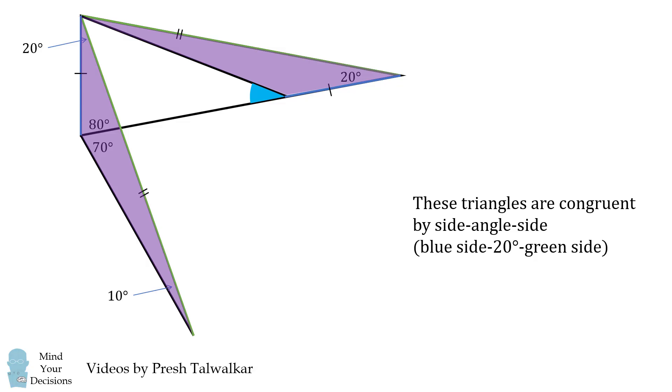Now they will be congruent to each other by side angle side because both of these triangles have a blue side, then a 20 degree angle, and then a green side. This means their obtuse angles will be equal to each other. So this angle here will be equal to 80 degrees plus 70 degrees which is 150 degrees.